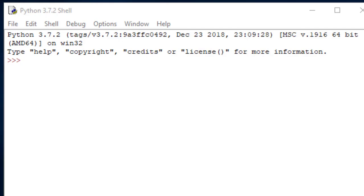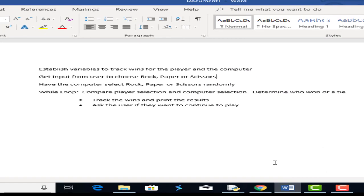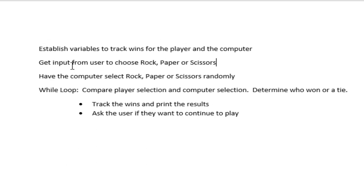Before we jump in, I'm just going to go over at a high level what we're going to do. First, we're going to establish variables to track wins for the player and for the computer. Then we're going to ask the user for input — choose rock, paper, or scissors. The computer will select randomly. We'll run a while loop to compare selections, determine a winner or declare a tie, track results, print them out, and then ask the user if they want to continue or break out of the game.